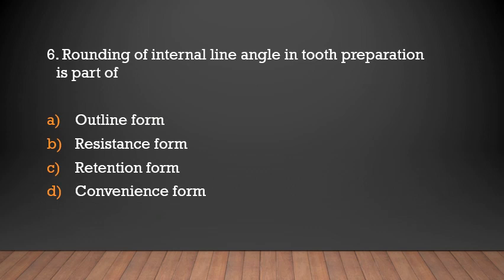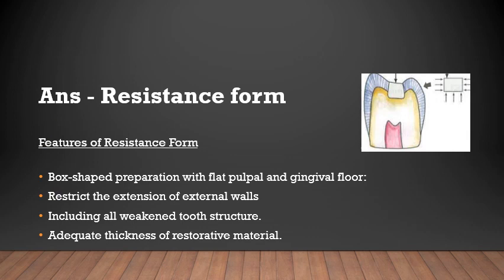Rounding of internal line angle in tooth preparation is a part of: outline form, resistance form, retention form, or convenience form? The answer is resistance form. Features that enhance resistance form include box-shaped preparation with flat pulpal and gingival floor, restricting extension of external walls including all weakened tooth structure, and adequate thickness of restorative material.